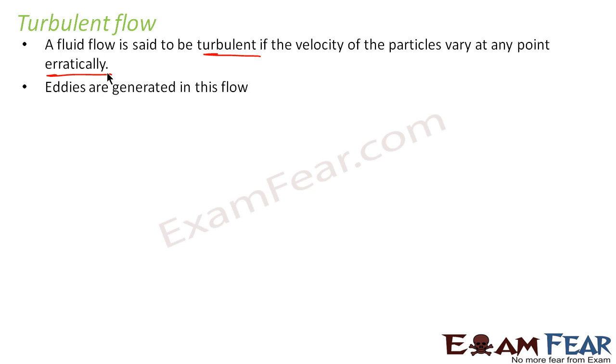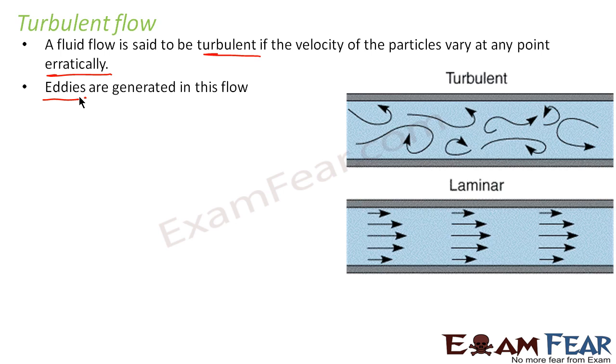Eddies are generated in this flow. Do you know what are eddies? Eddies are sort of ripples. If you observe when you throw a stone on a river, you get ripples, right? Those are called eddies. Eddies are a wavy motion, an erratic motion which takes place due to random flow of particles here and there.